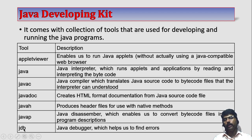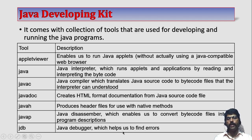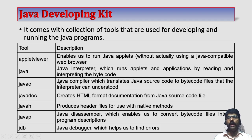JDB — it's a debugger. Java Debugger helps us to find errors. These are the tools provided in the Java Development Kit.